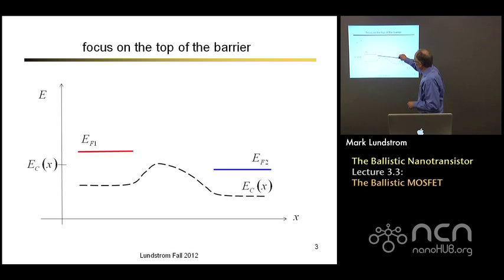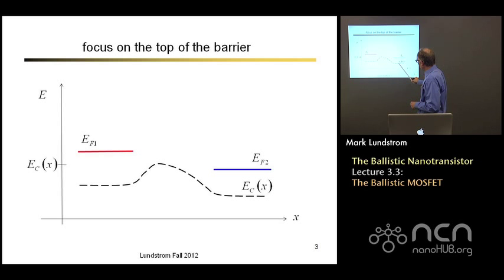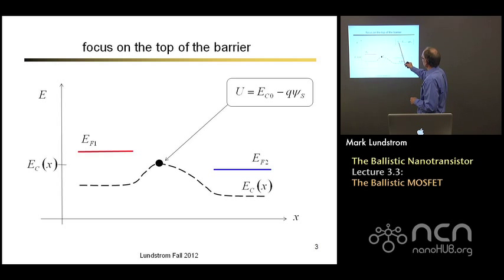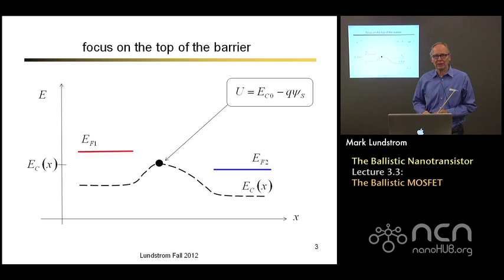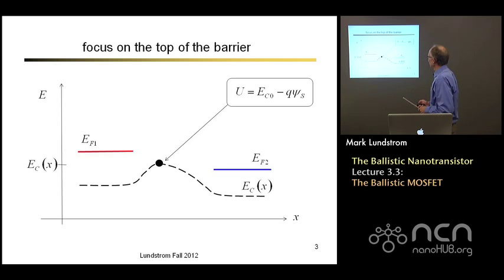MOSFETs are all about modulating the height of a potential energy barrier that controls current flow. Here's a sketch of the conduction band diagram from the source, with a source Fermi level, across the channel, out the drain with a drain Fermi level. We focus on the top of the barrier, which has a potential energy U given by the conduction band edge, lowered when the surface potential is positive and raised when negative. That's how we make a transistor.